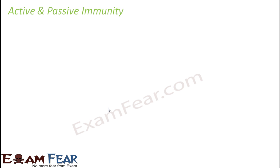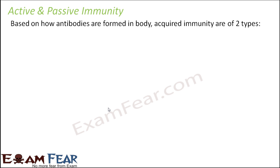Now we will talk about yet another two types of immunity: active and passive immunity. Based on how antibodies are formed in the body, acquired immunity is of two types. Previously we saw, based on the type of mediator — who mediates or controls the process of immunity — it was of two types: humoral and cell-mediated immunity. Now based upon how antibodies are formed in the body, they are again of two types.